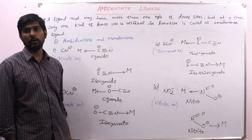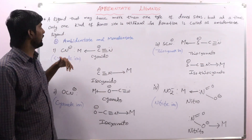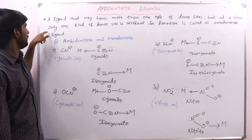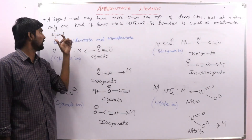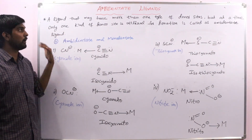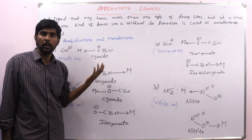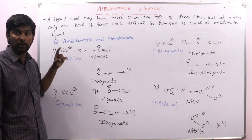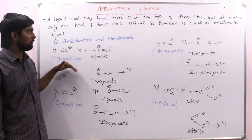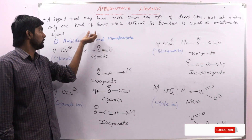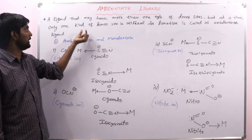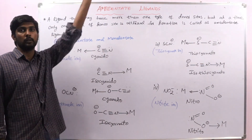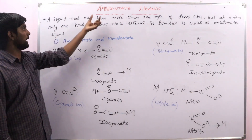The first type is ambidentate ligands. A ligand that may have more than one type of donor site, but at a time only one kind of donor site is utilized for donation, is called an ambidentate ligand. Donor site means donor atom. At a time, while participating in bonding with the central metal atom, it may utilize only one kind of donor atom — not just one atom, but one type.